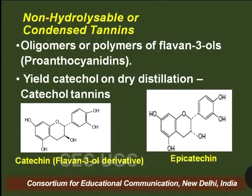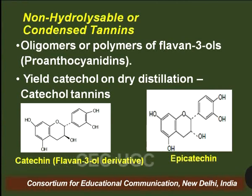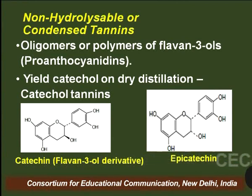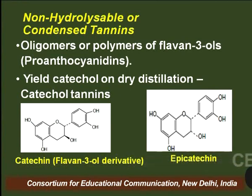Non-hydrolyzable or condensed tannins are normally considered as oligomers or polymers of flavan-3-ol molecules, which are also known as proanthocyanidins. When they undergo dry distillation, they give rise to catechol, and therefore they are also known as catechol tannins, although this term is less prevalent than condensed tannins or proanthocyanidins.